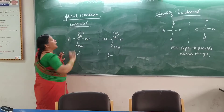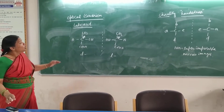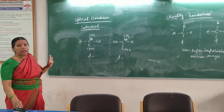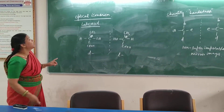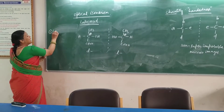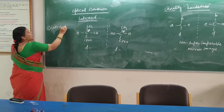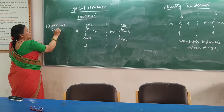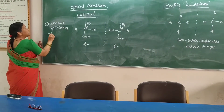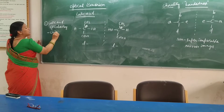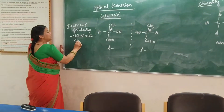These two are mirror images which are non-superimposable and also have a chiral centre. Therefore lactic acid is an optically active isomer. The question may ask: lactic acid is optically active — why? Because it has a chiral centre and also it has chirality.